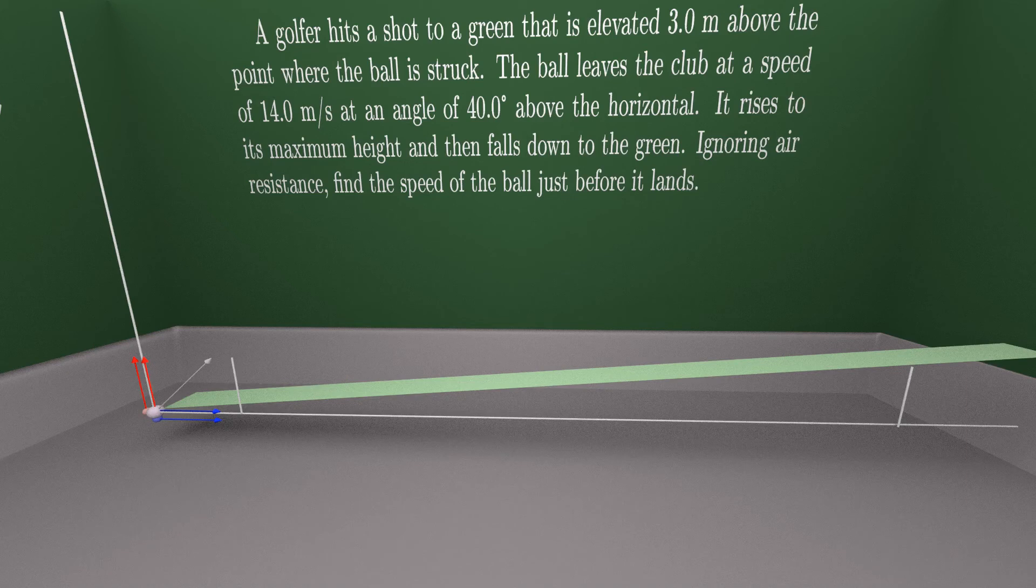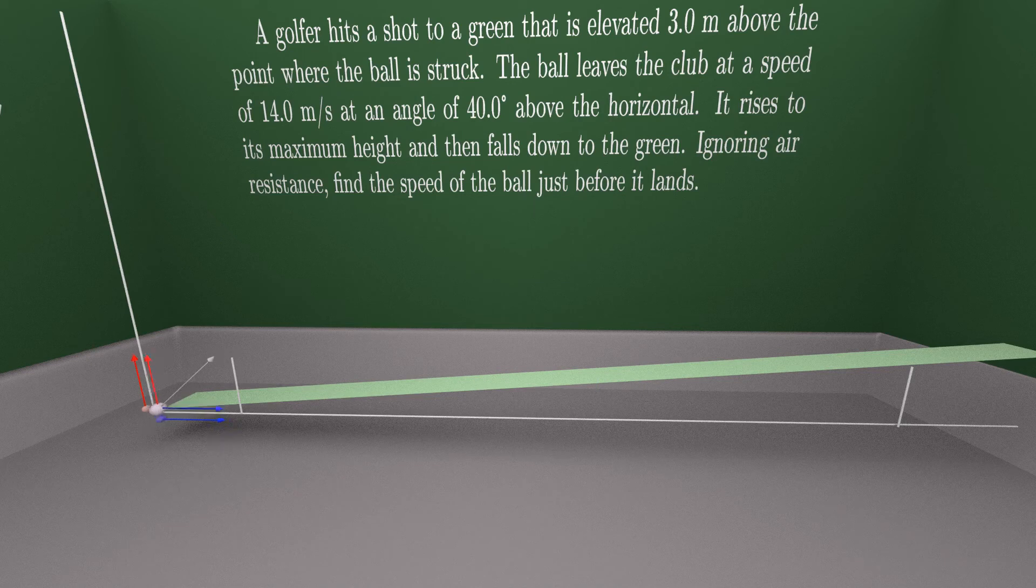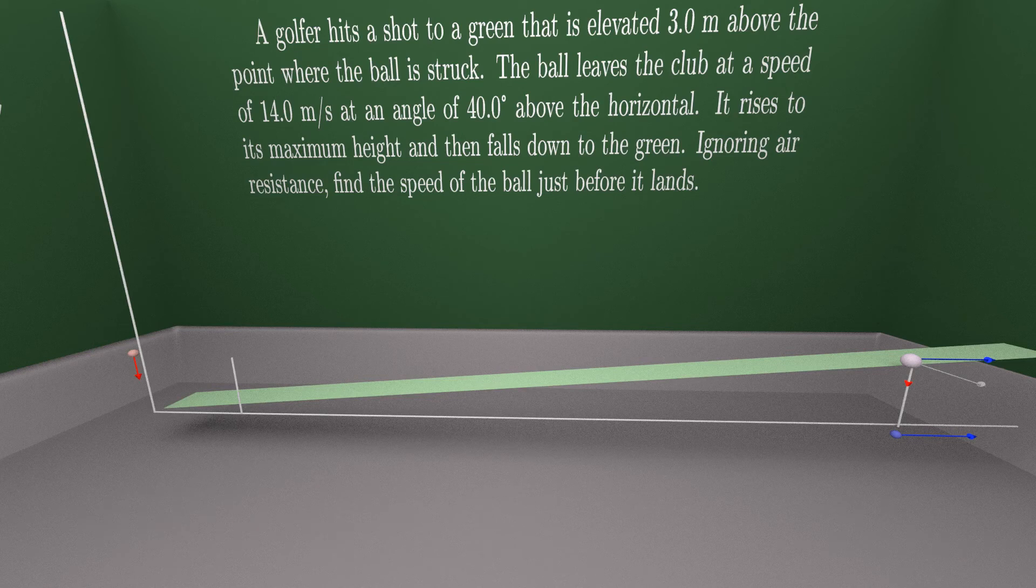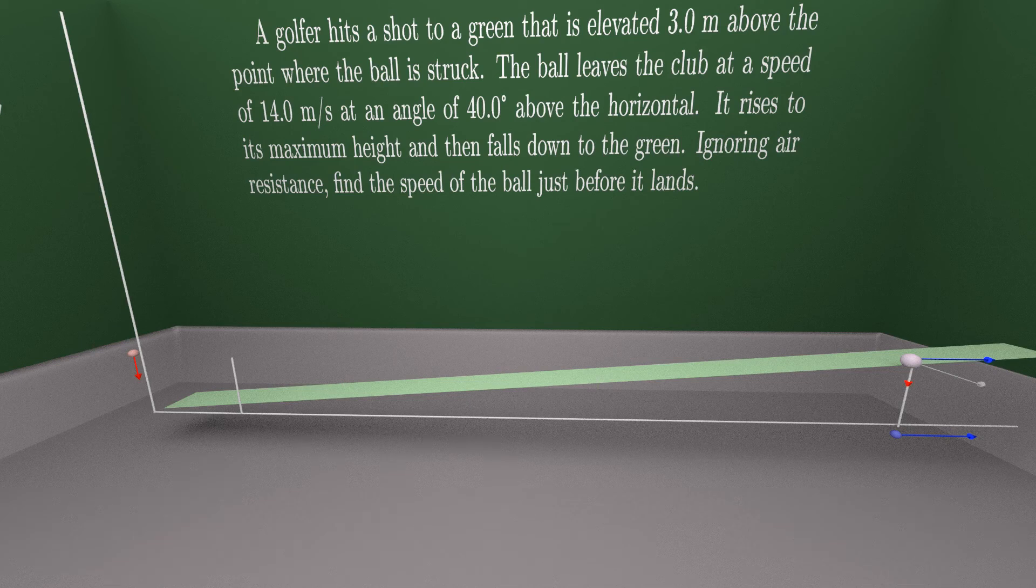A golfer hits a shot to a green that is elevated three meters above the point where the ball is struck. The ball leaves the club at a speed of 14 meters per second at an angle of 40 degrees above the horizontal. It rises to its maximum height and then falls down to the green. Ignoring air resistance, find the speed of the ball just before it lands.